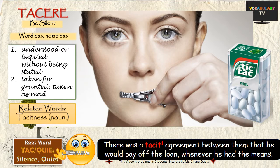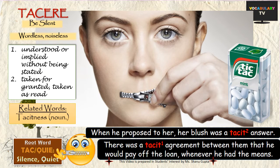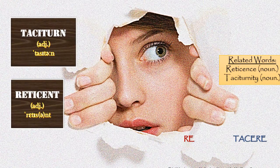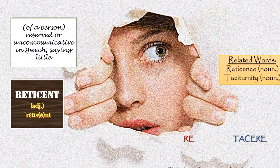TACIT might also be used when something is taken for granted — like in this sentence: when he proposed to her, her blush was a tacit answer. A related word is TACITURN. Taciturn literally describes someone for whom silence is a habit; that is to say, a taciturn person is reserved or uncommunicative in speech, speaks little, and is temperamentally untalkative.